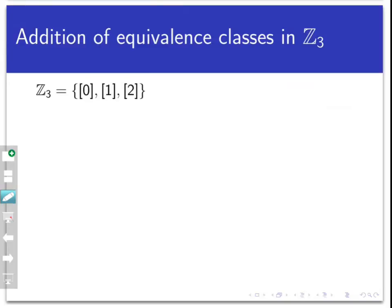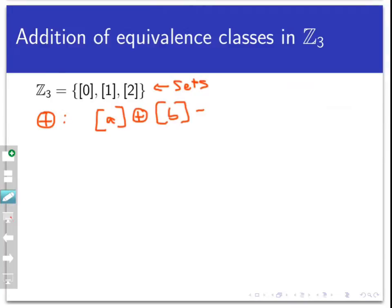We'll restrict our attention to ℤ₃ first, then generalize to any ℤ mod n. ℤ₃ consists of three equivalence classes: the class of 0, the class of 1, and the class of 2. We define a new kind of addition, denoted ⊕, where the class of A ⊕ the class of B equals the class of A plus B — that is, the equivalence class of the regular integer sum of the representatives.